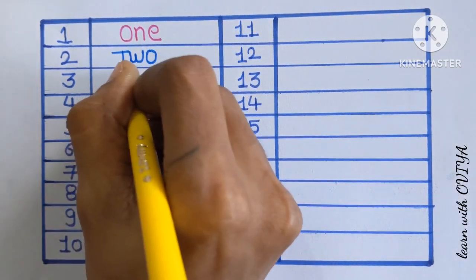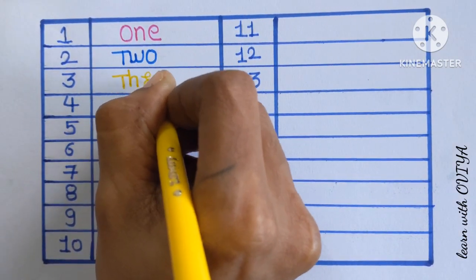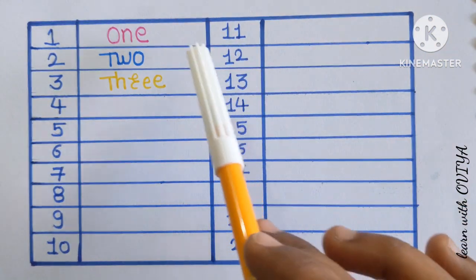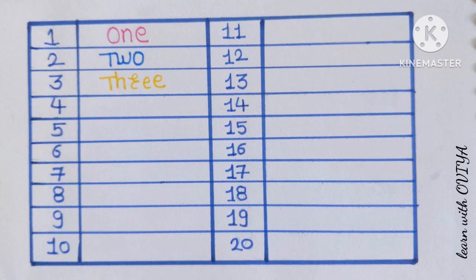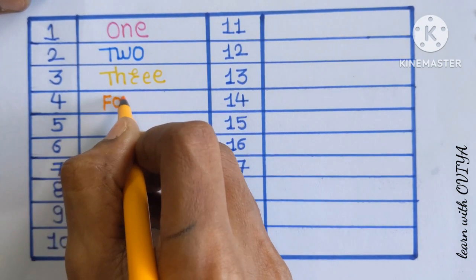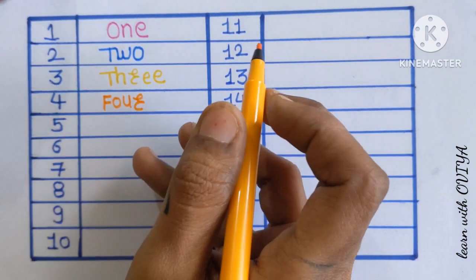3. T-H-R-E-E. 1 in a pink color. 2 in a blue color. 3 in a yellow color. Next number is 4, orange color. F-O-U-R. 4.